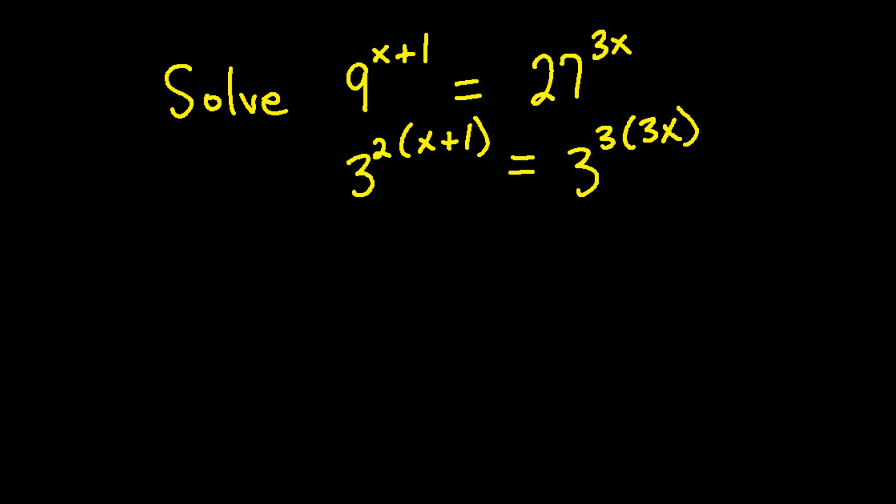We can then use the property that states that if the bases of the exponents are the same and they are equal to one another, that means their exponents are equal. In essence we can cancel out the 3 bases. We'll set the exponents equal to each other to solve the problem.